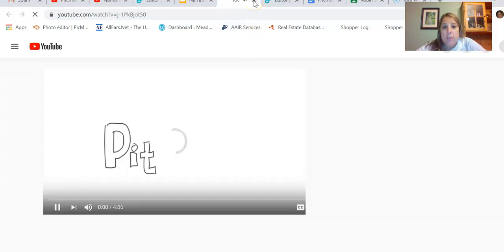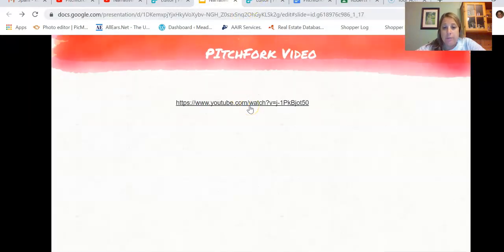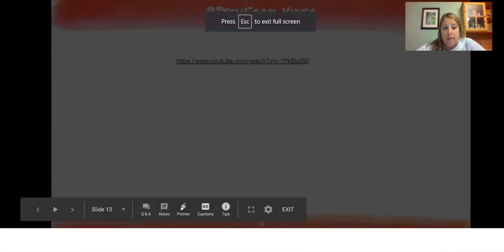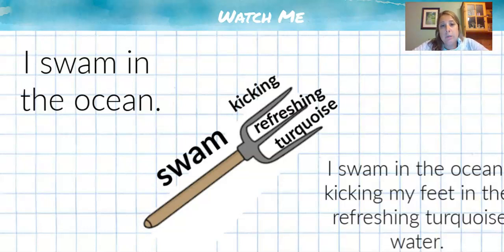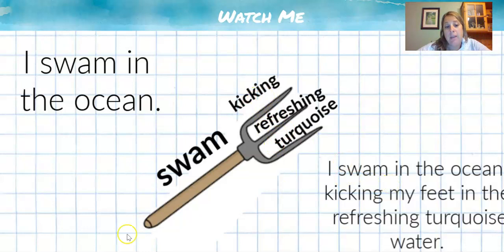Welcome back. Now that you've learned a little about what pitchforking is, let's look at this sentence: I swam in the ocean. I'm going to take the word swim — that's going to be my noun — and put it on the handle of the pitchfork. Now I'm going to think of three words that remind me of swimming to enhance my sentence. I thought about kicking, refreshing, and turquoise. So my new sentence was: I swam in the ocean, kicking my feet in the refreshing turquoise water. You see how we picked a verb from our sentence and added three more adjectives or descriptions to describe it, and it really helps to enhance the sentence.